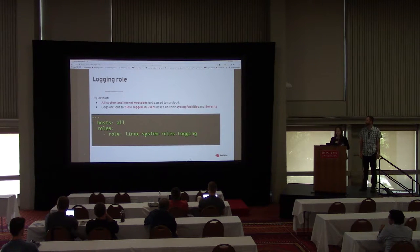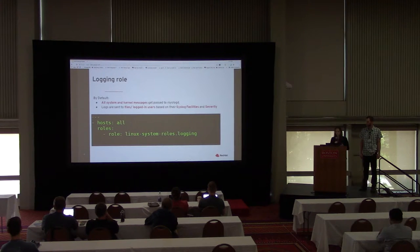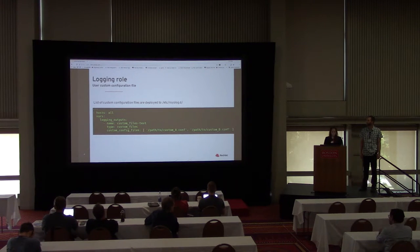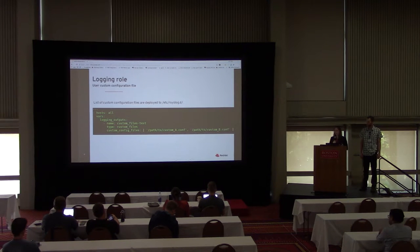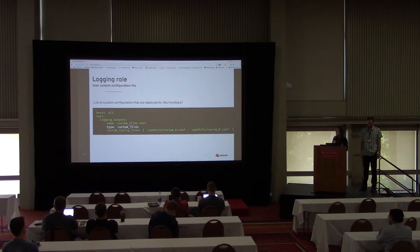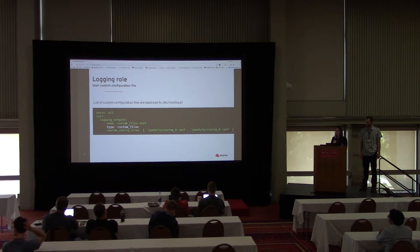rsyslog allows multi-threading, secure connections, diverse destinations, filtering of any part of the syslog message, fully configurable output format, and is suitable for classic relay chains. When you run the logging role by default, it ensures you have the latest rsyslog package, deploys the default rsyslog config which collects journal records and sends them to files based on the application — for example to /var/log/messages, /var/log/cron — and based on severity.